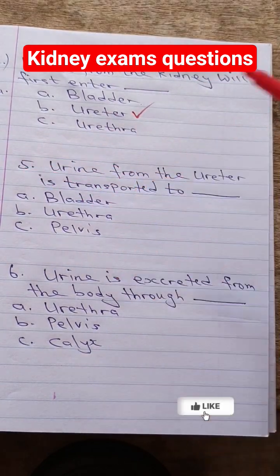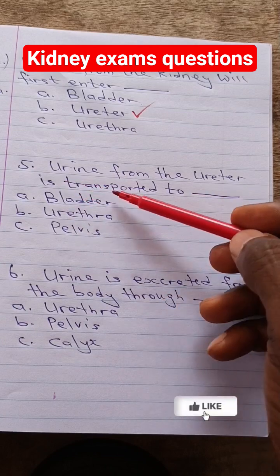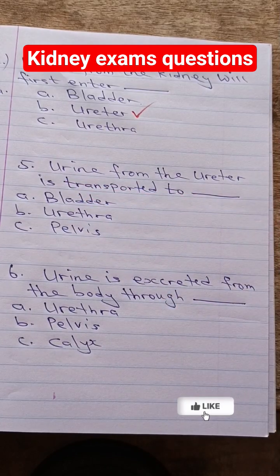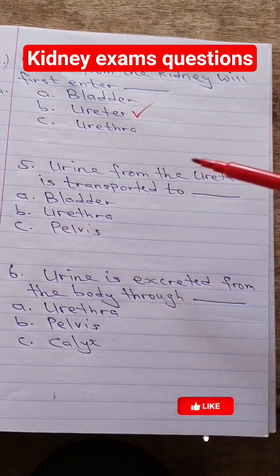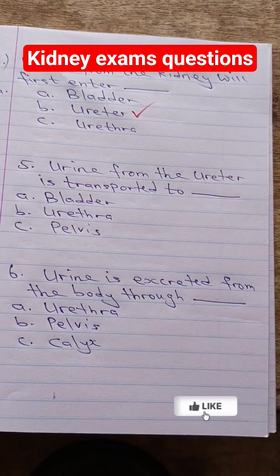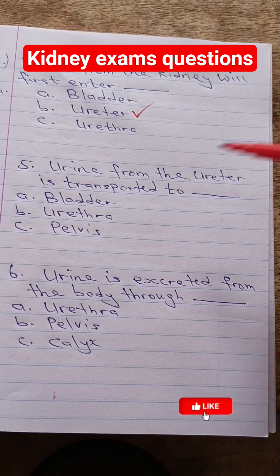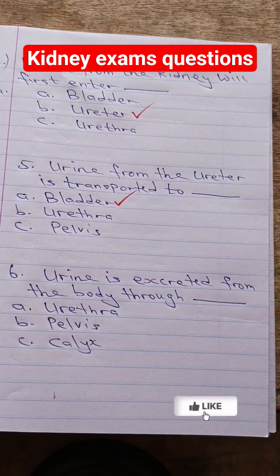Question 5: Urine from the ureter is transported to dash. Is it bladder, ureter, or pelvis? Answer: bladder.